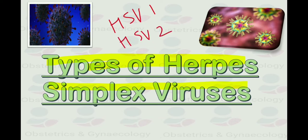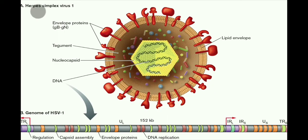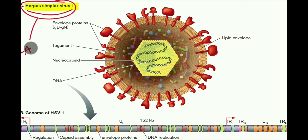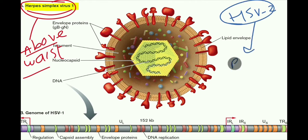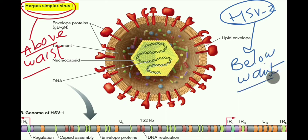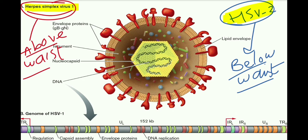Herpes Simplex Virus 1 causes problems, complications, signs and symptoms in the area above the waist. Whatever herpetic infection is caused above the waist is basically caused by HSV1. Below the waist — for example, herpes genitalis and neonatal encephalitis — those problems are caused by Herpes Simplex Virus 2.